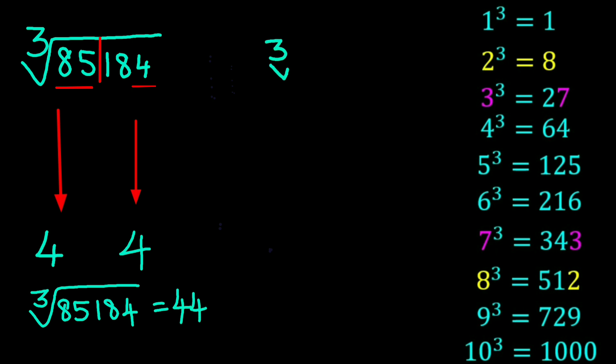Next, cube root of 19,683. Split into two parts. The last digit is three. That corresponds to the number seven. Strike out the last three digits. Nineteen lies between the cube numbers two and three. So we have two. Twenty-seven is our answer.